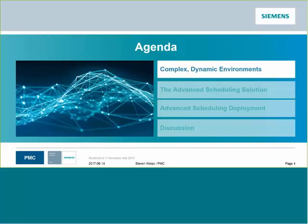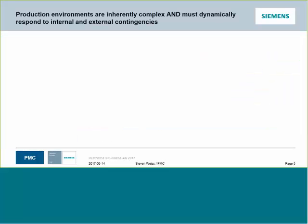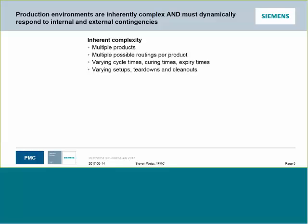Let's begin talking about how manufacturing environments are complex and dynamic. Production environments are inherently complex and they must dynamically respond to internal and external contingencies. From the standpoint of a production controller who has a set of orders for a set of products that need to be sequenced and scheduled to run through a production facility, right away there's inherent complexity. There are multiple products and generally multiple possible routings per product. Unless there is an assembly line situation where everything is perfectly synced up, the various workstations are going to have varying cycle times.